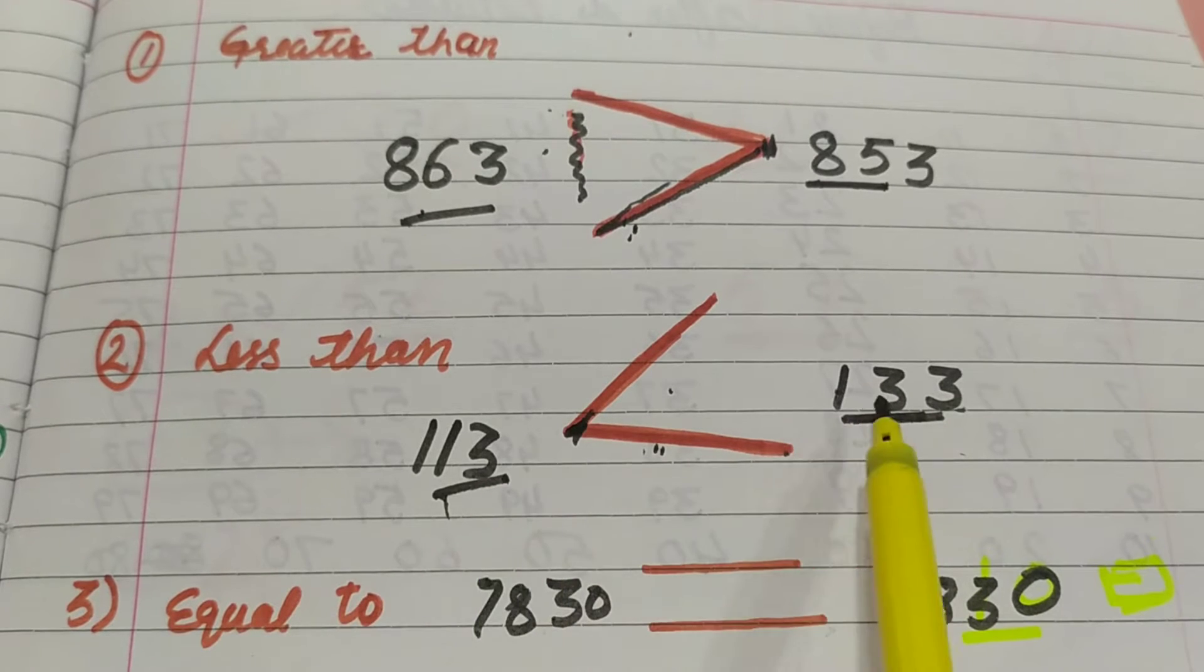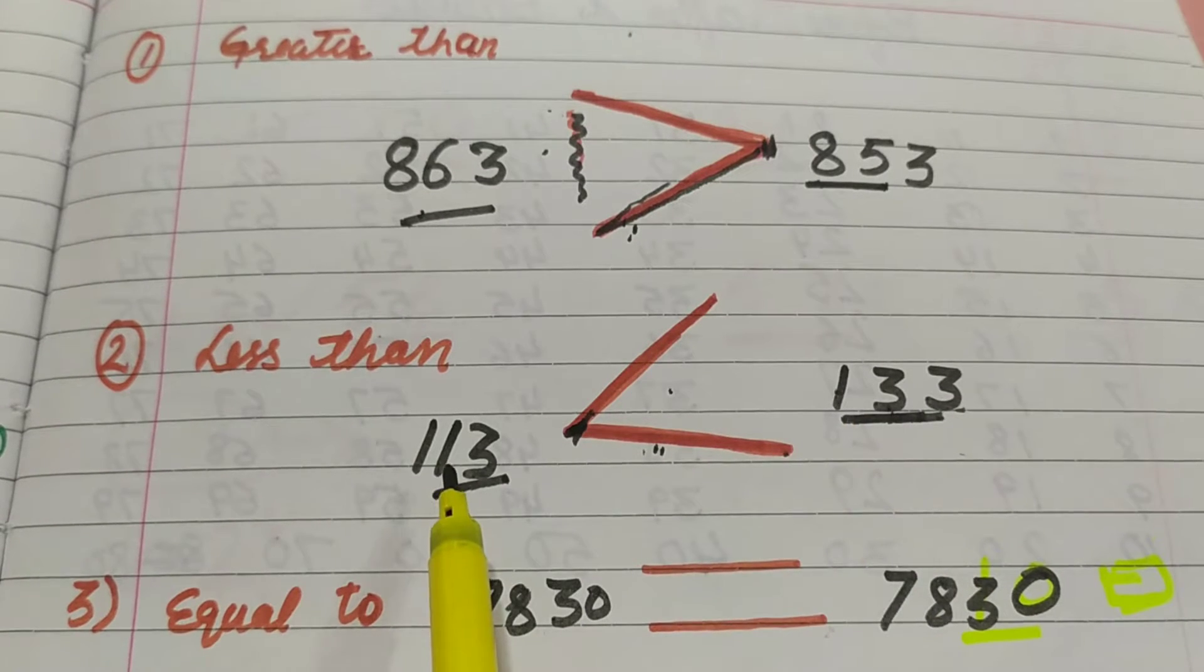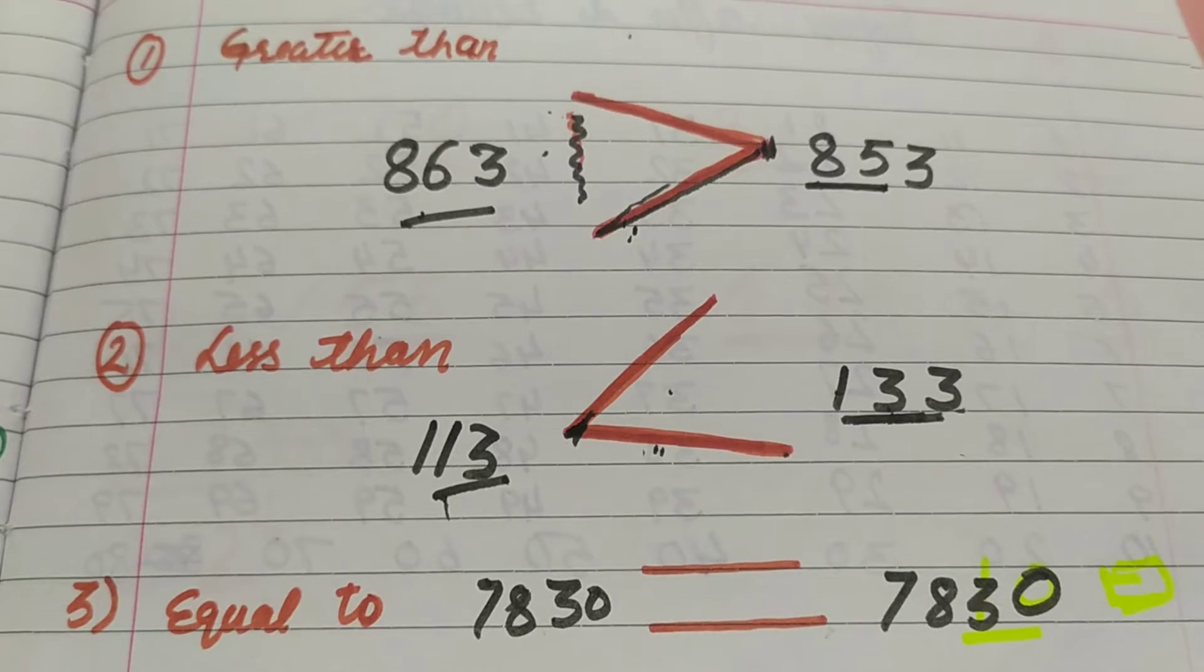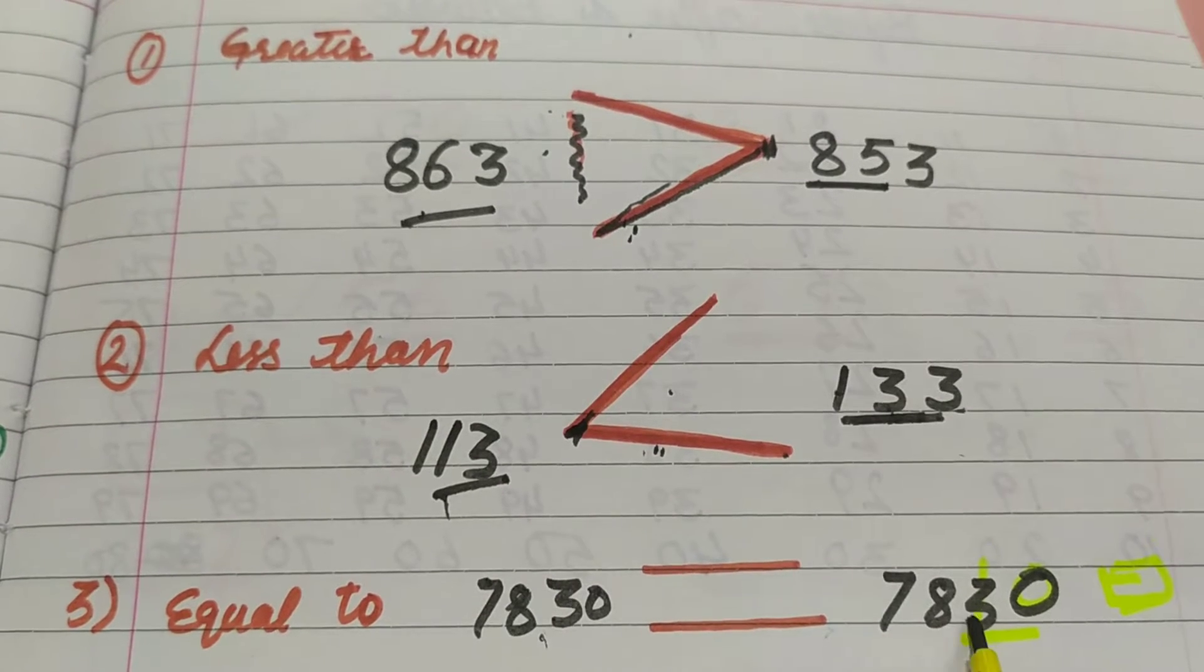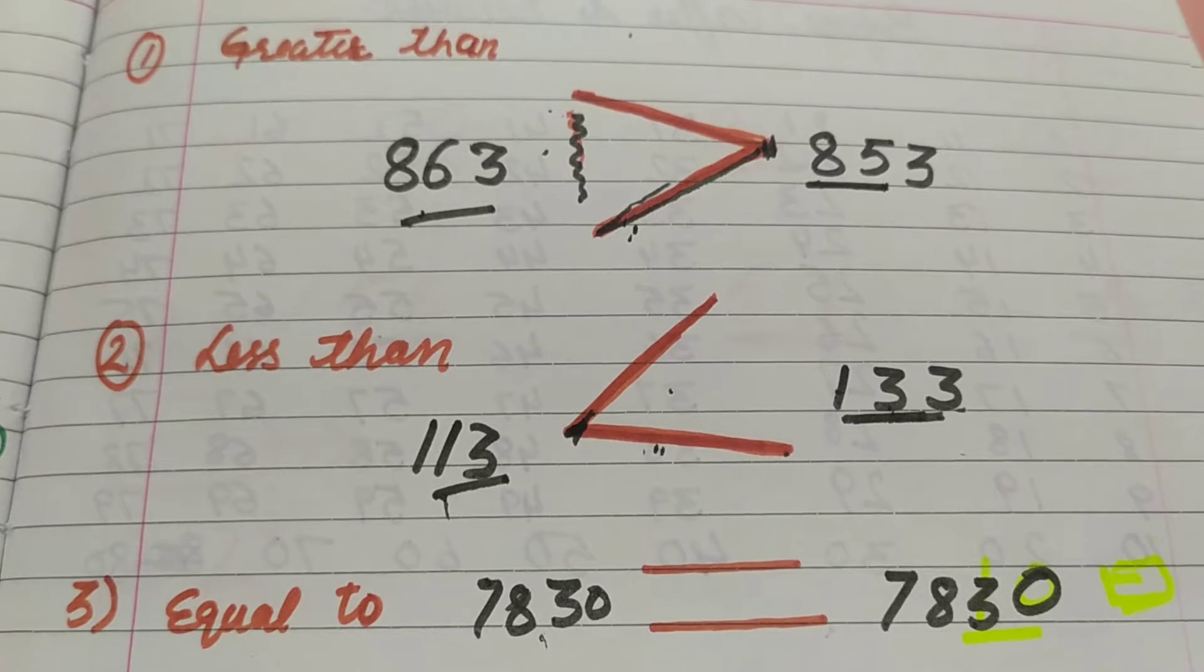133 is greater number and 113 is smaller number. So smaller number is back. If both numbers are equal, then we will put equal to sign.